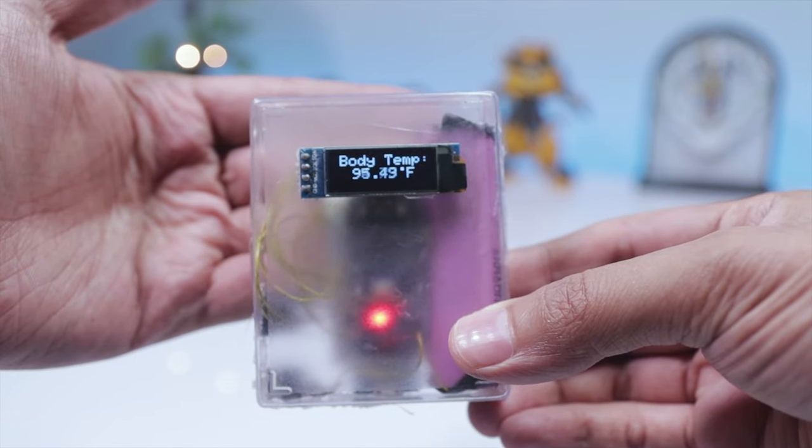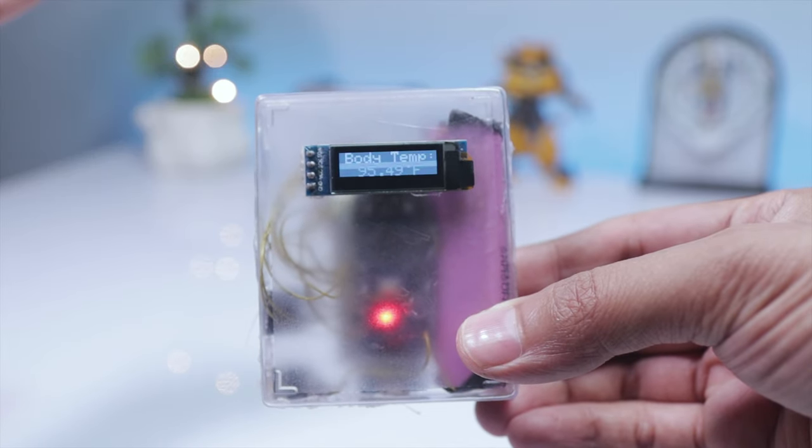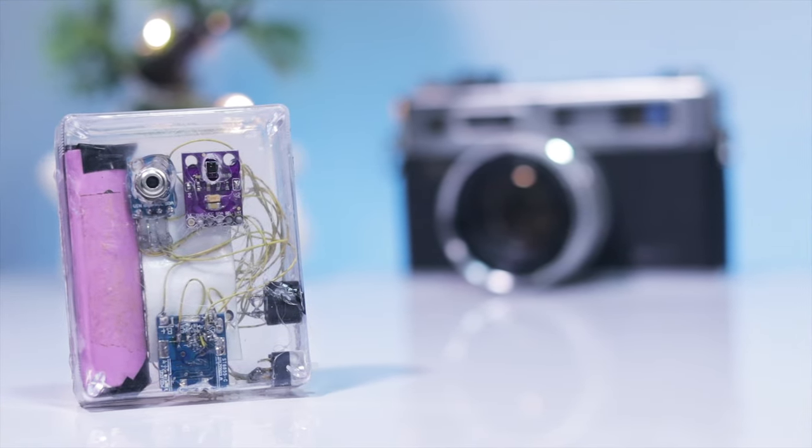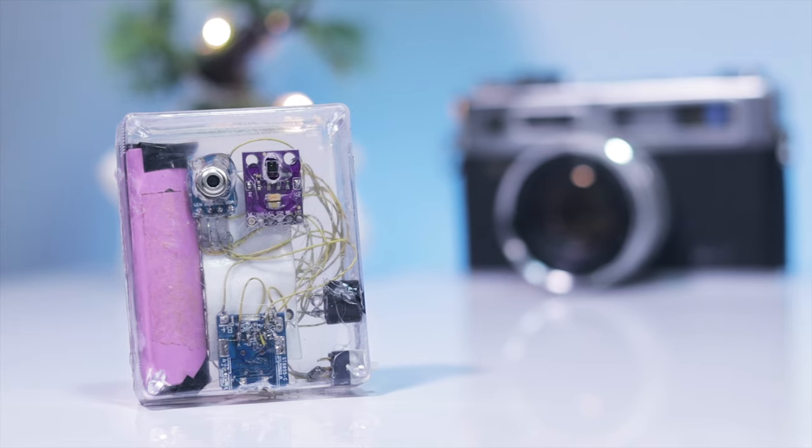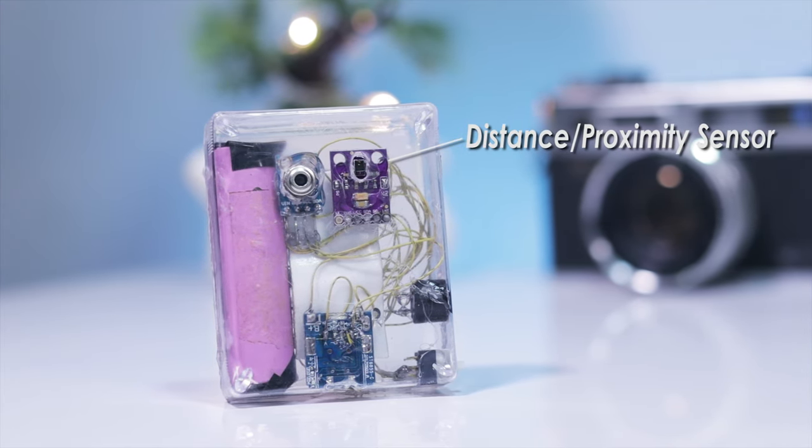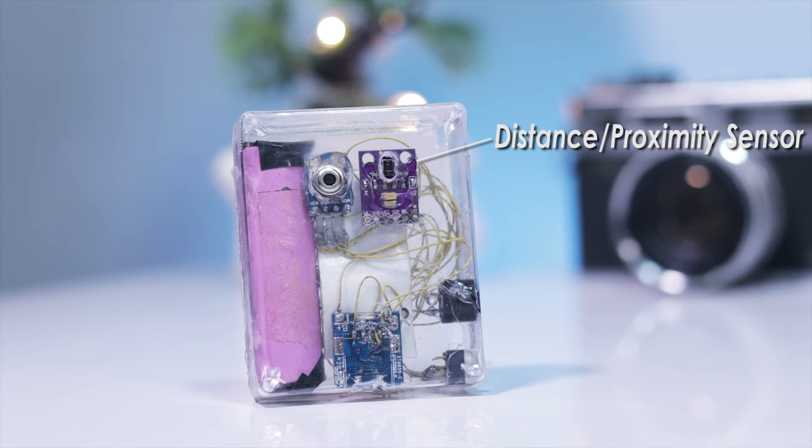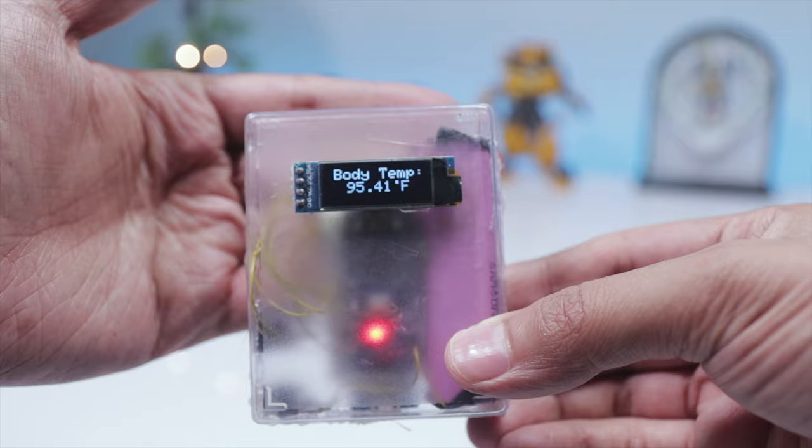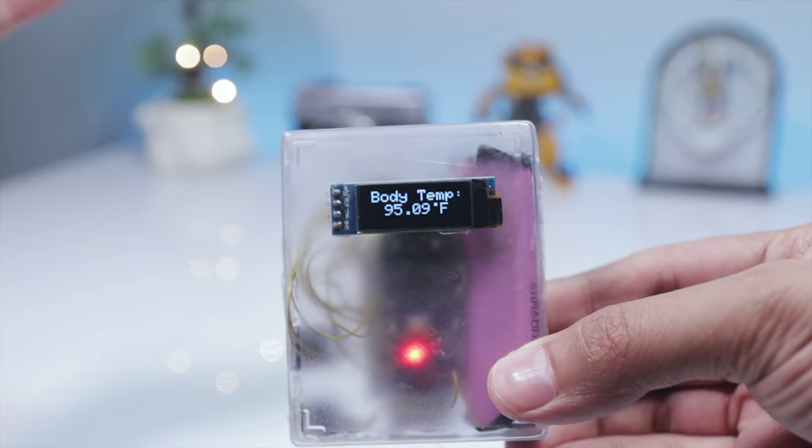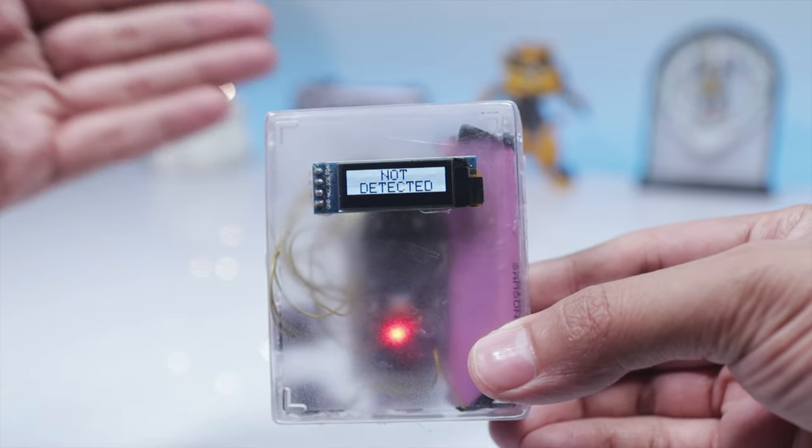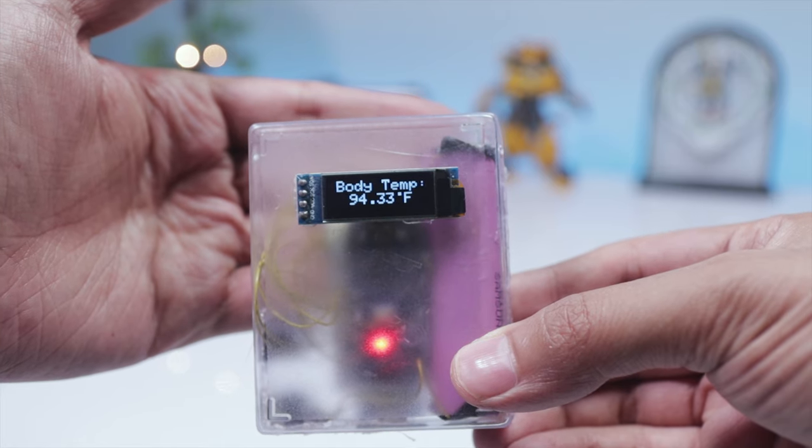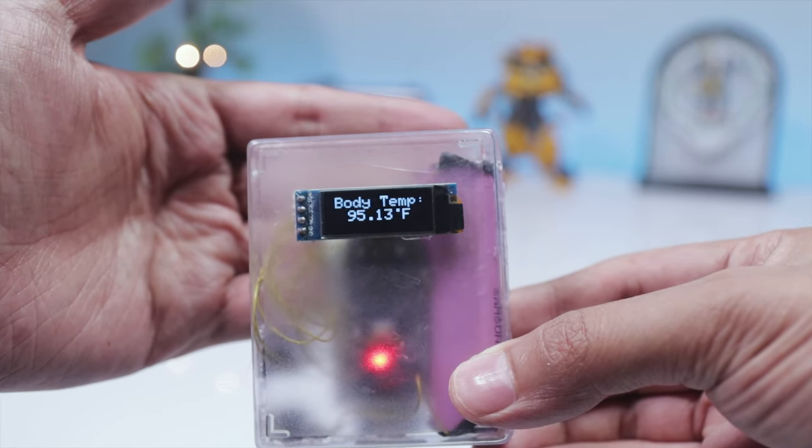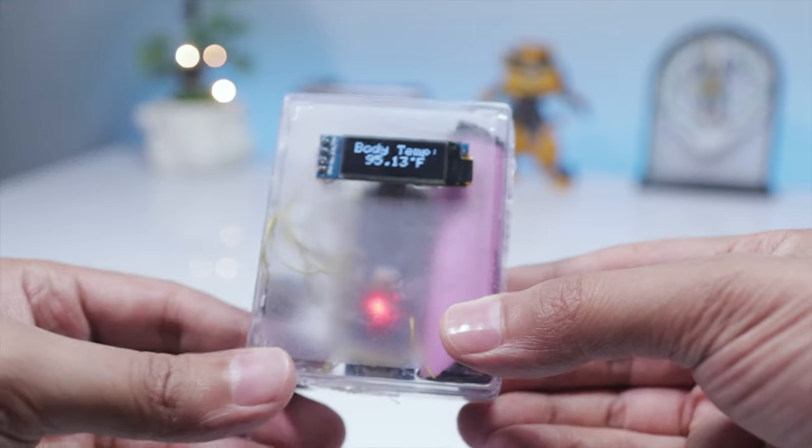Although these kind of DIY thermometers have been around on the internet for quite some time, I have greatly improved its design and effectiveness by using a proximity sensor. Because the infrared temperature sensor that is used in this project gives inaccurate and different results depending on the distance, so the proximity sensor makes sure that you get the perfect results from the same distance every time you check the temperature.